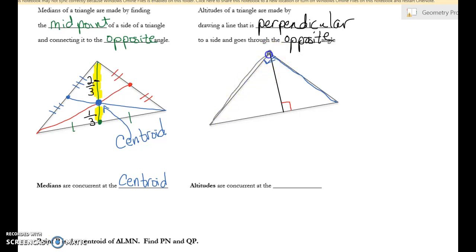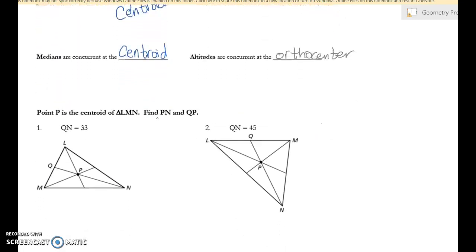And this is the point where they intersect, which is called the ortho center. Ortho centers don't do anything special. It's just the point of concurrency for altitudes, while centroids they do cut the segment up. So let's look at these centroid problems.